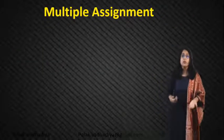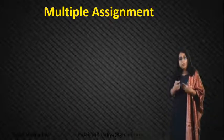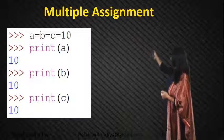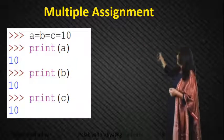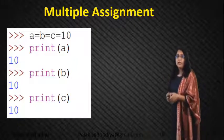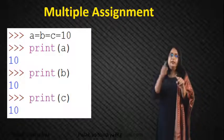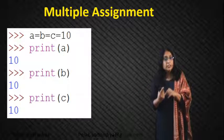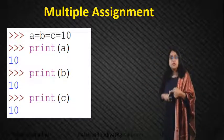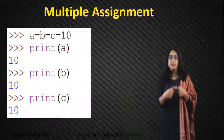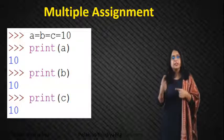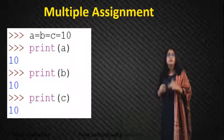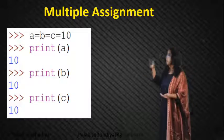Now we will see how to assign values to multiple variables. If I write a = b = c = 10, then a contains 10, b is also equal to 10, and c is also equal to 10. I can check this using the print command: print(a) gives 10, print(b) gives 10, and print(c) also gives 10. So here we have assigned the same value to multiple variables — this is known as a vertical assign.